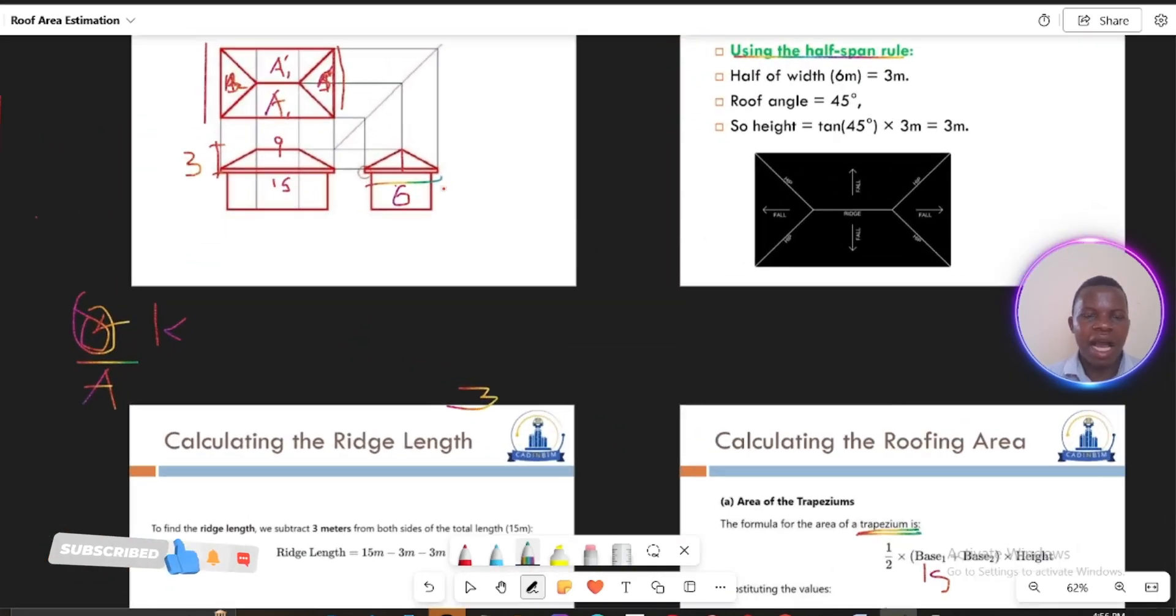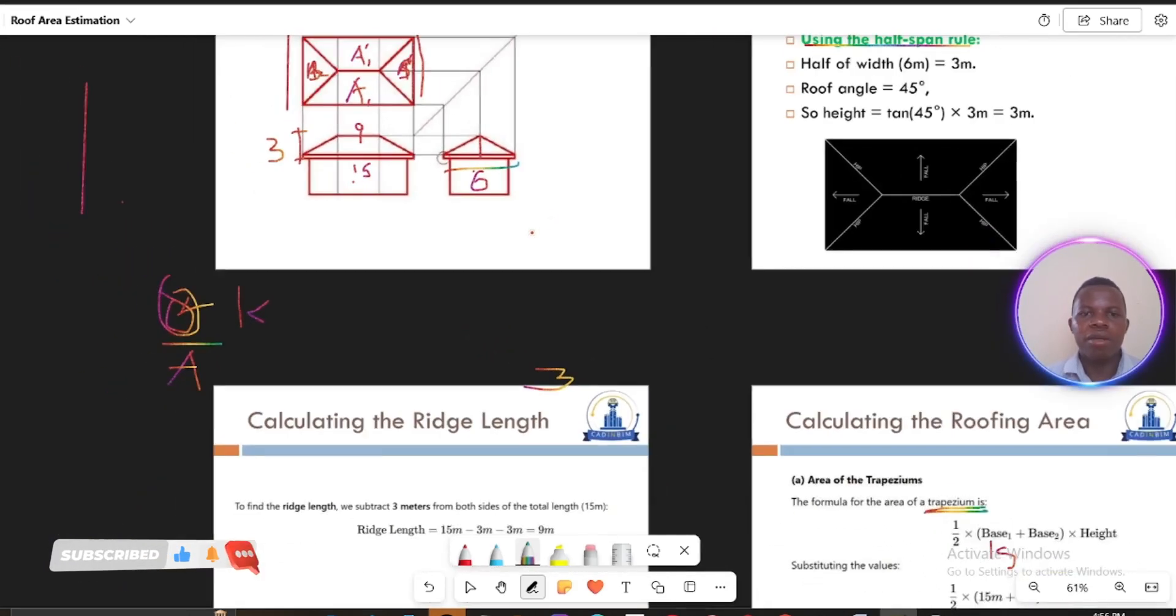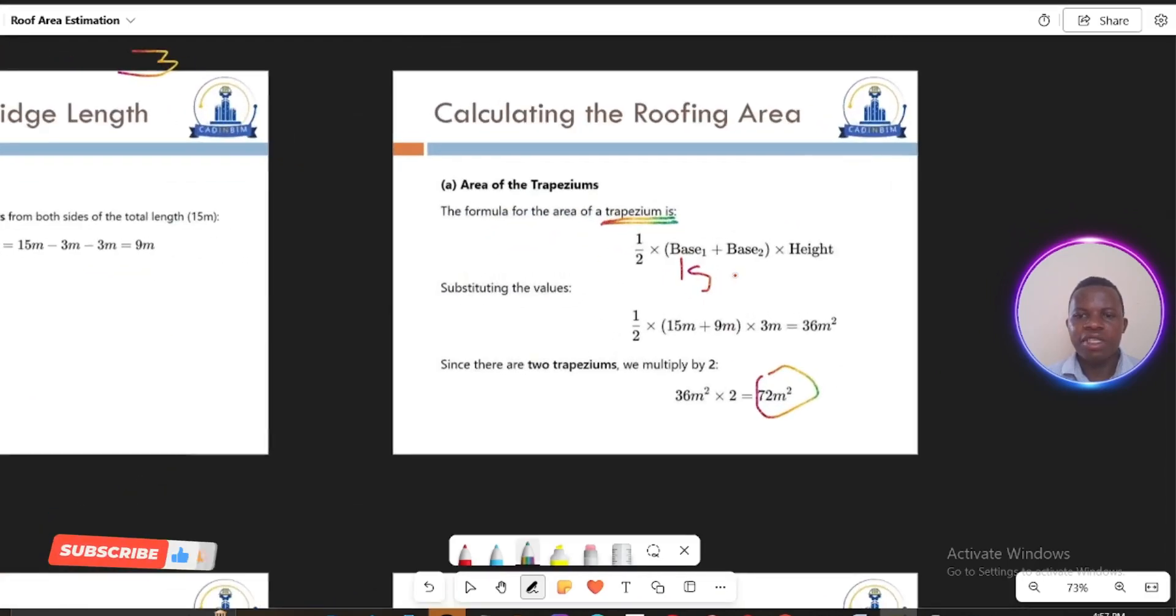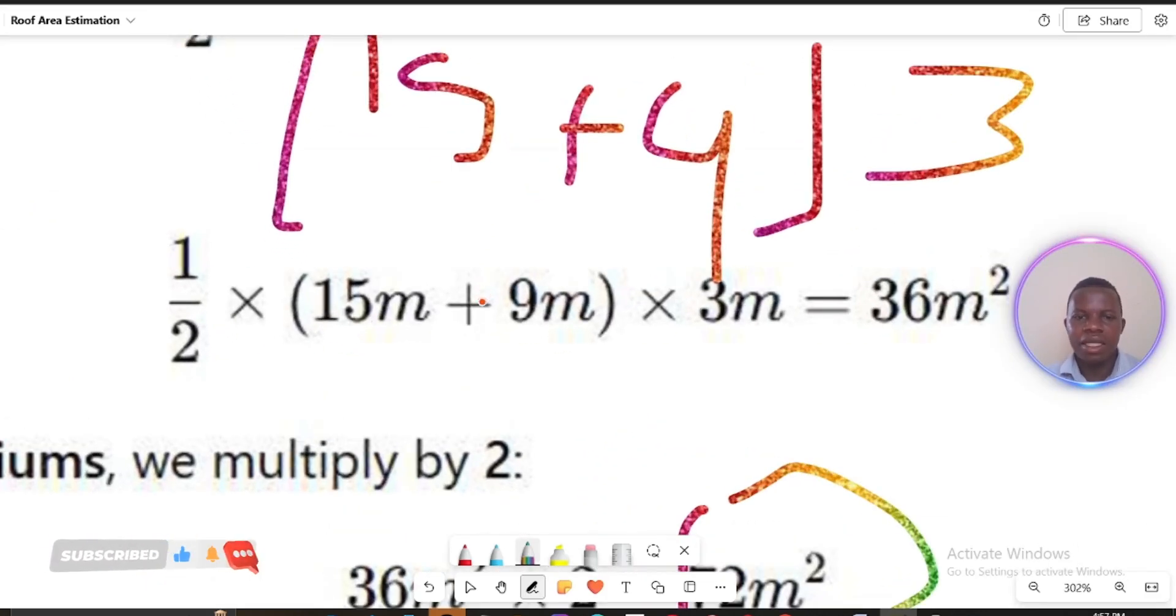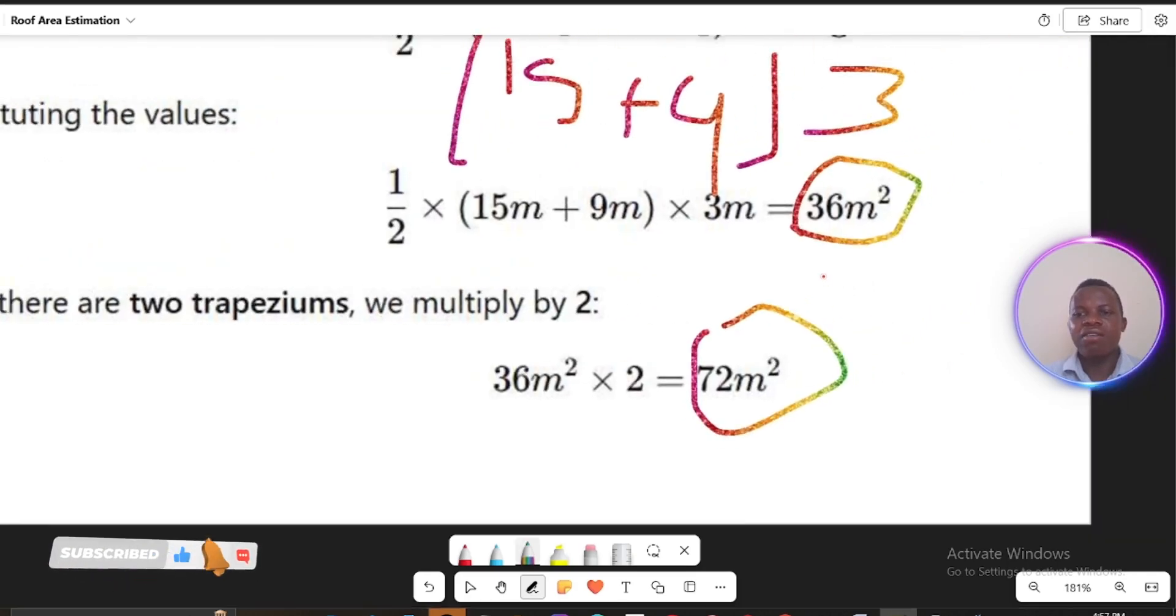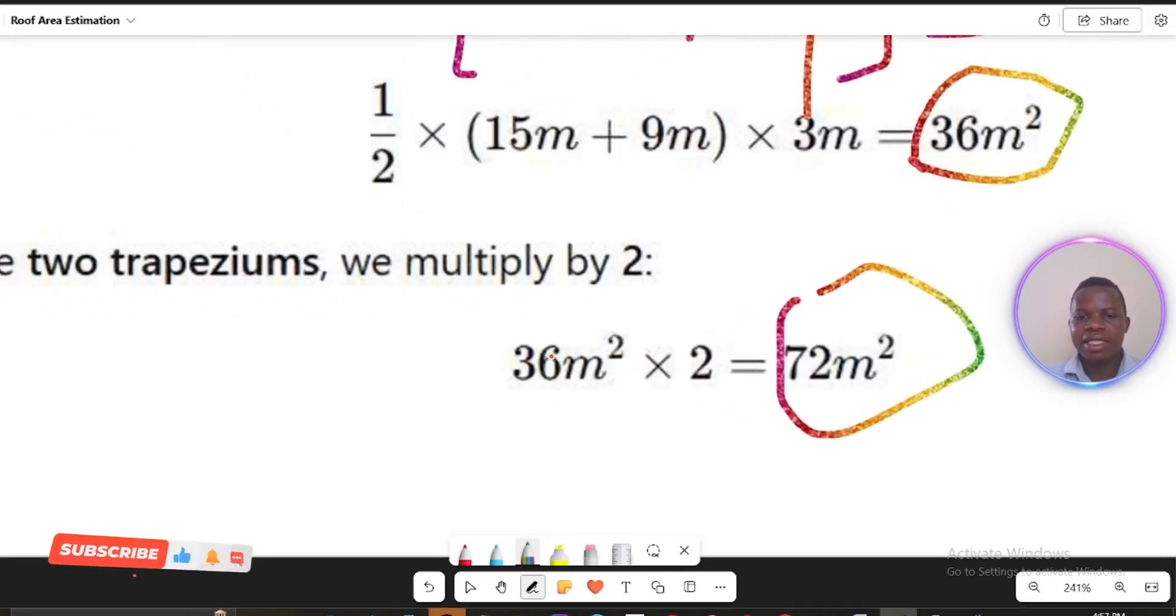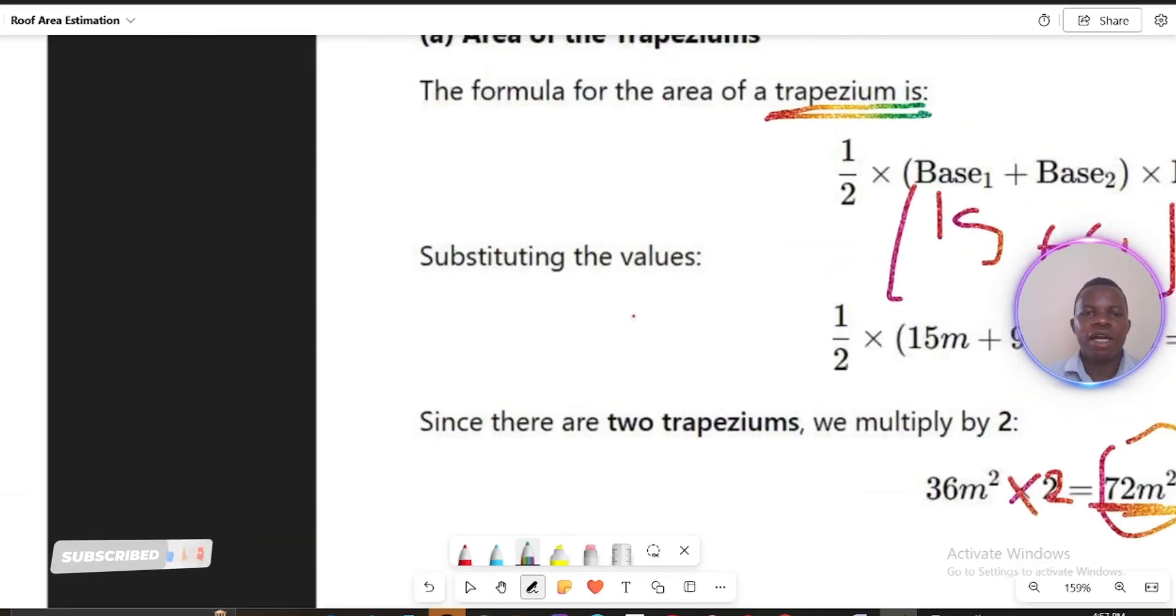So here we have 15 plus 9, you multiply by the height of 3. So if you work out this, then it is ½(15 + 9) × 3. You work out then you are going to get an area as 36. Then remember that 36 is the area of a single trapezoid, but you have two of them. So you multiply 36 by 2, and you will arrive to your answer as 72 as the total area of these sides of a trapezoid.